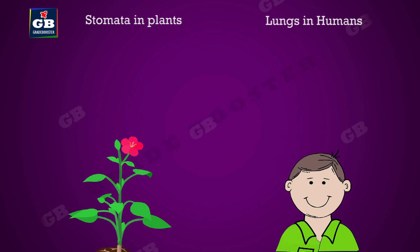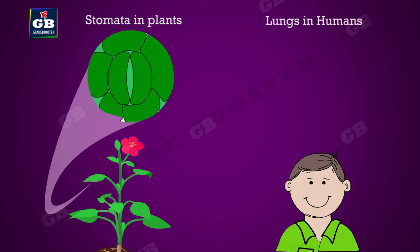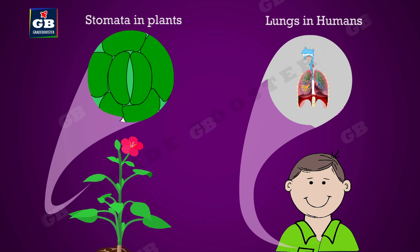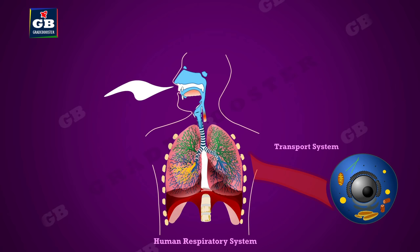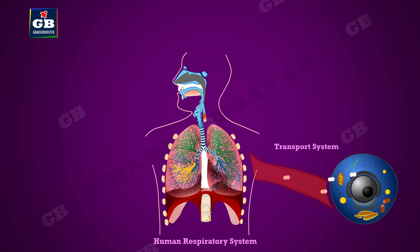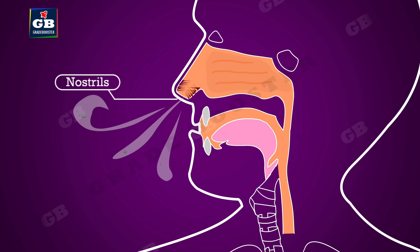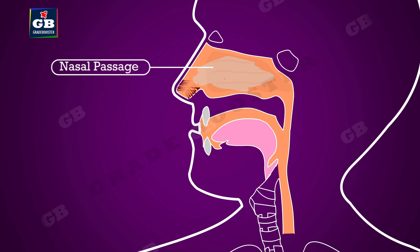Aerobic respiration requires a continuous supply of oxygen. Plants have stomata to exchange gases with the atmosphere, whereas animals have special respiratory organs to get oxygen from their surroundings. Human beings have a well-developed respiratory system. It begins with a pair of nostrils through which air enters the body; nostrils are lined by fine hairs to filter dust.